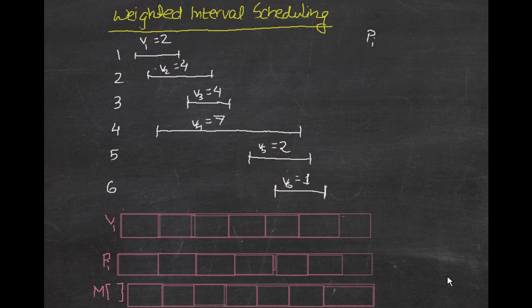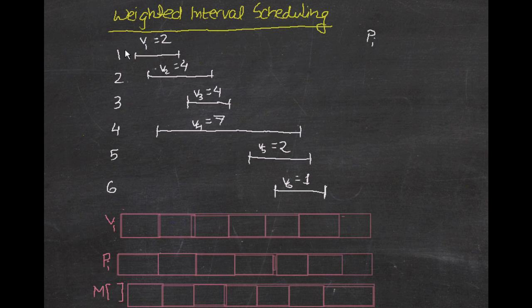Hello everyone, today we are going to be starting our third dynamic programming algorithm tutorial, and this is on weighted interval scheduling. Weighted interval scheduling states that you have a given set of weights with starting times and finishing times. The main criteria for this problem is that you have to maximize the total weight so that the selected weights are non-overlapping with each other.